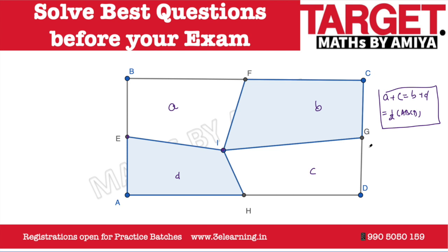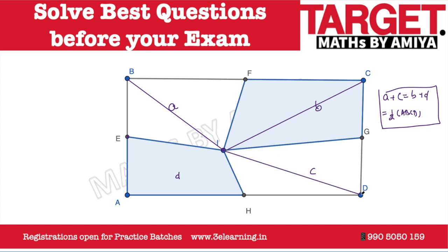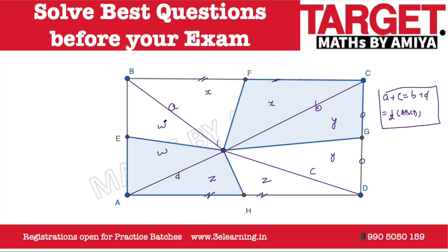Now for the proof — join point I to all the vertices. We use the basic concept of the median: a median divides a triangle into two equal-area parts. Say the area of triangle BFI is X; then the adjacent triangle also has area X because IF is a median. Assume the next region is Y; by the same median property the paired region is also Y. If one region is Z, its pair is also Z; and if one region is W, its pair is also W.